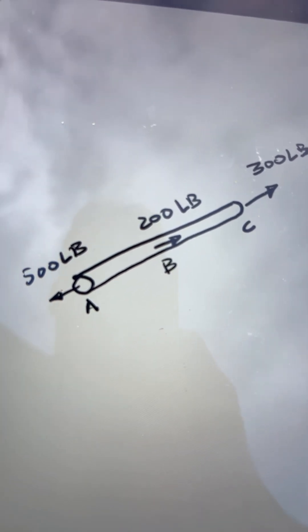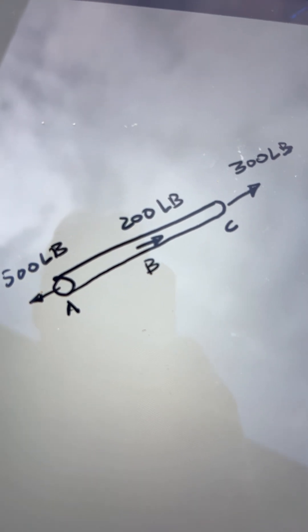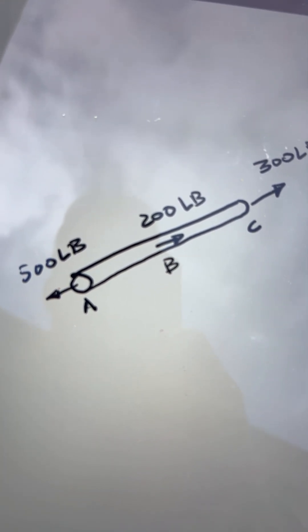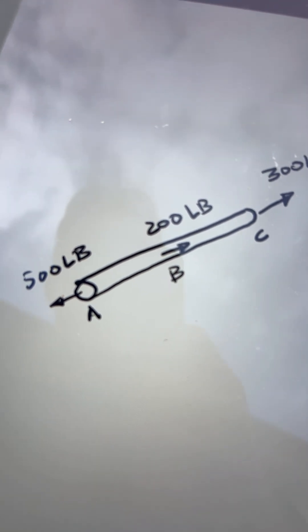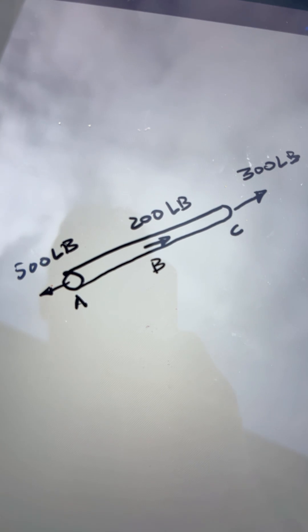This is so easy that any student in the second or third week of statics should be able to spot that the AB portion has an internal load of 500 pounds tension, and the BC portion is 300 pounds tension. We can spot this looking at the ends.